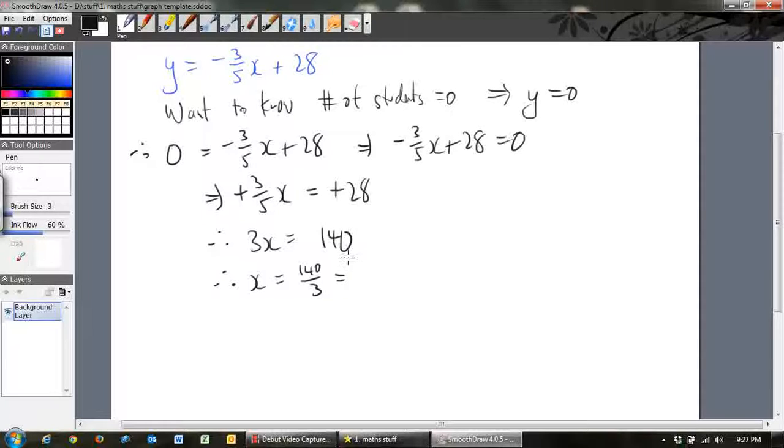Did I get that right? 20 times 5 is 100, 8 times 5. Yes. And so therefore I'll divide both sides by 3. That's equal to 140 divided by 3. So that's 46.66, okay?